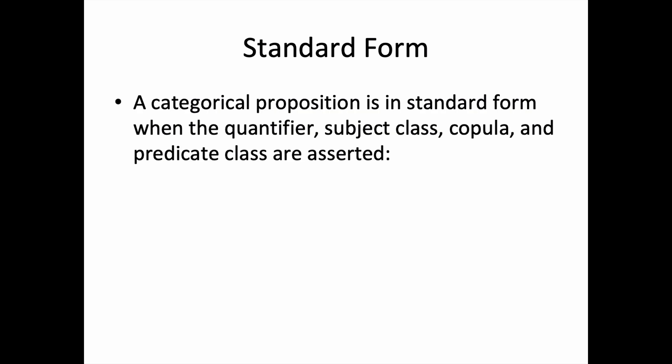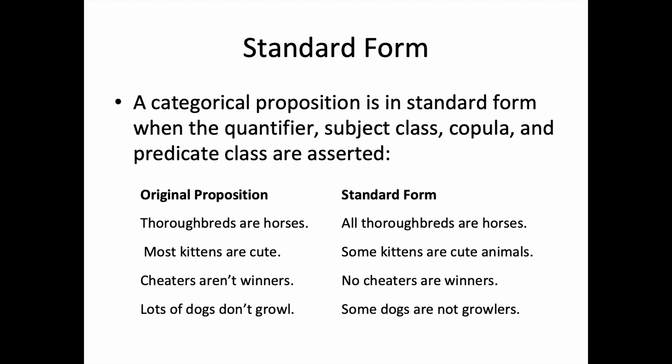Lastly, let's talk about standard form. A categorical proposition is in standard form when the quantifier, subject class, copula, and predicate class are explicitly asserted. A categorical proposition does not have to be in standard form, but we put it in standard form in order to more clearly see the logical structure of the proposition and also to make certain inferences from it. We're less likely to make mistakes when we do so.